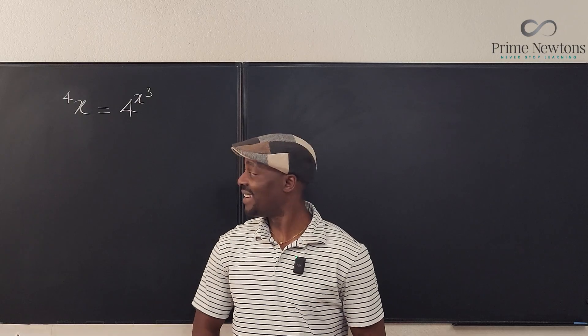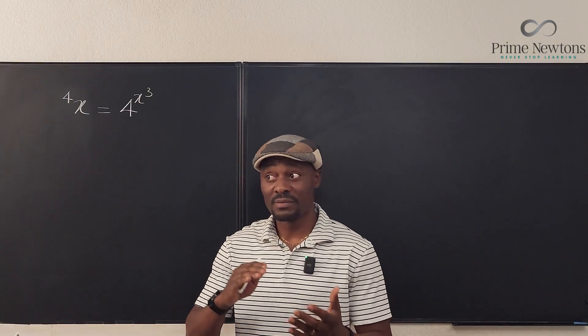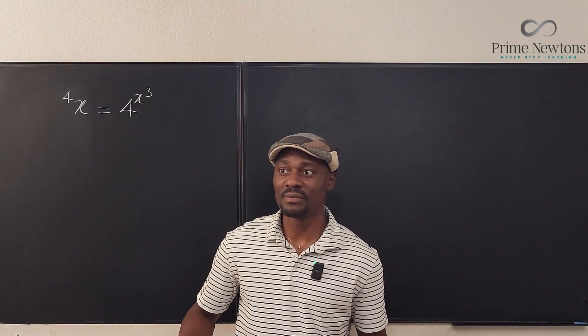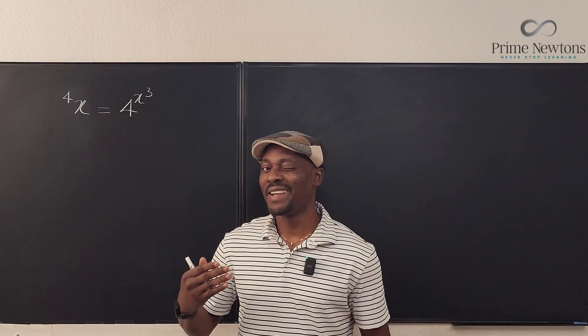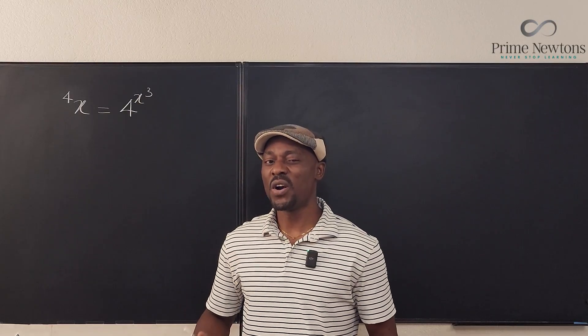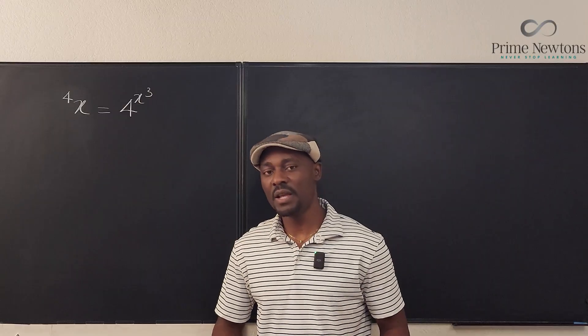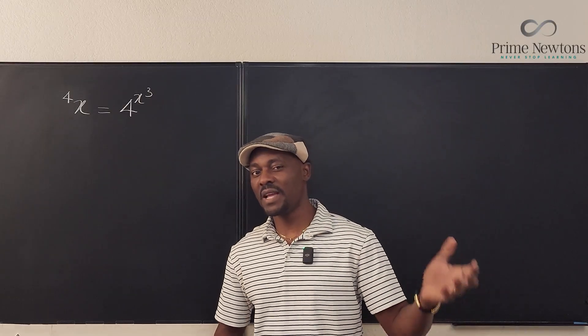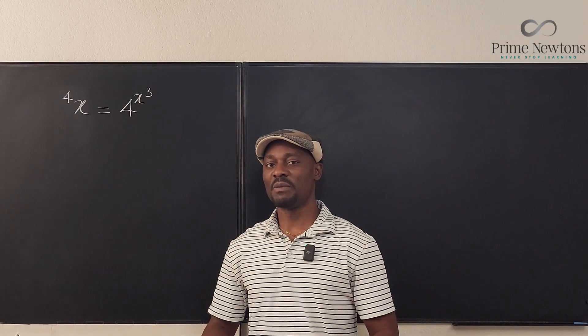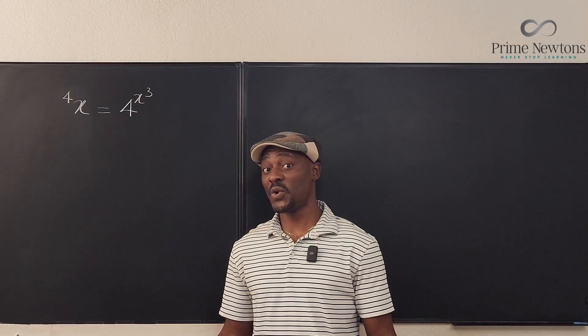Welcome to another video. I have a tetration exponentiation equation and I actually had a hard time solving this equation algebraically, so I quickly plugged it into Desmos and I was able to get a graph. The graph showed that there were two intersections between the graph on the left and the one on the right.